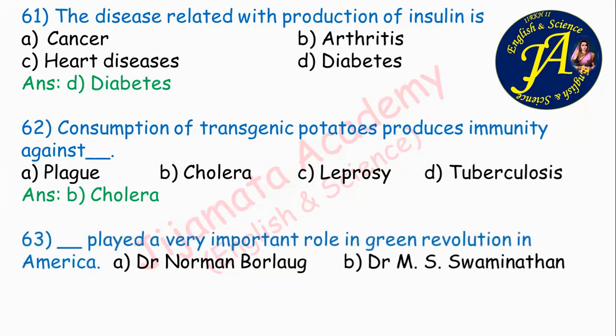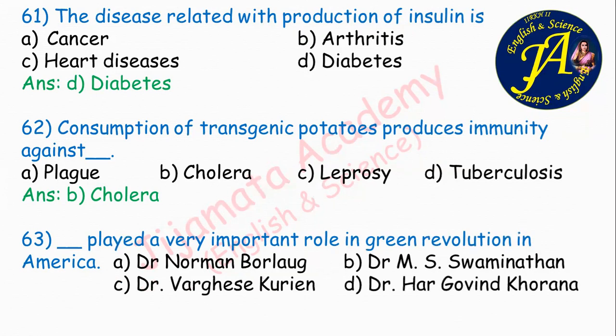Dash played a very important role in the green revolution. Options are Dr. Norman Borlaug, Dr. M.S. Swaminathan, Dr. Varghese Kurien, Dr. Har Govind Khorana. Option A: Dr. Norman Borlaug is the correct answer for the green revolution in America.